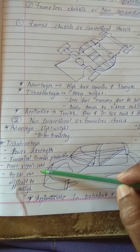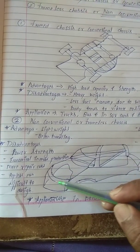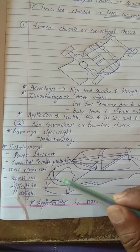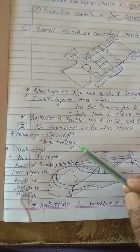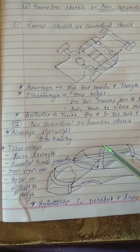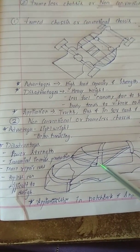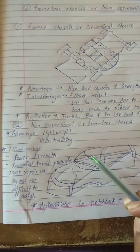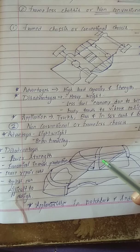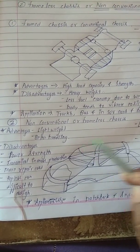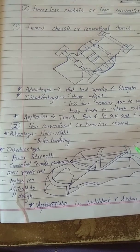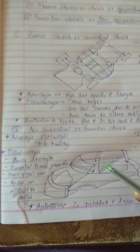Also, topless cars are difficult to design. Suppose we want to remove the top — what will happen is the strength will be lost. The design is very complicated because this is a whole unit only. If we remove the top, the force transmission or the strength which is being provided by the top will be reduced. So that is why so much effort is required to design a topless car.